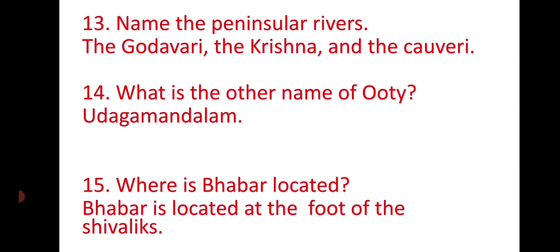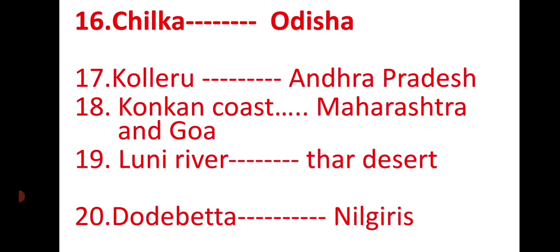The Siwalik Parvath foothills extending 1 to 8 km are called Babar. Now for match-the-following answers: Chilka Lake is located in Odisha. Kolleru Lake is located in Andhra Pradesh. Kolleru Lake is a freshwater lake and Chilka Lake is a saltwater lake. The Maharashtra and Goa coastal region is called the Konkan Coast. The Luni River is the only river in the Thar Desert. Dodabetta is the highest mountain in the Nilgiri Hills.